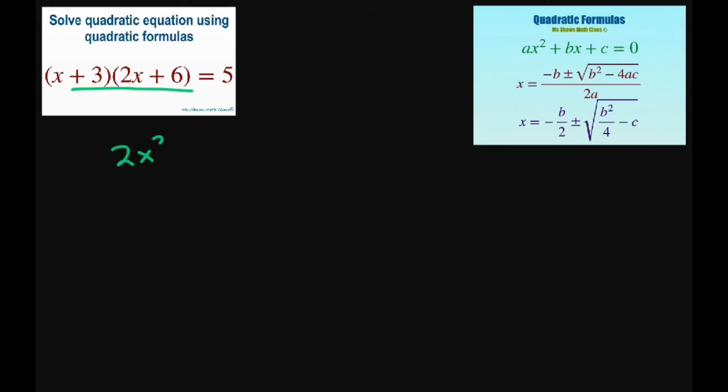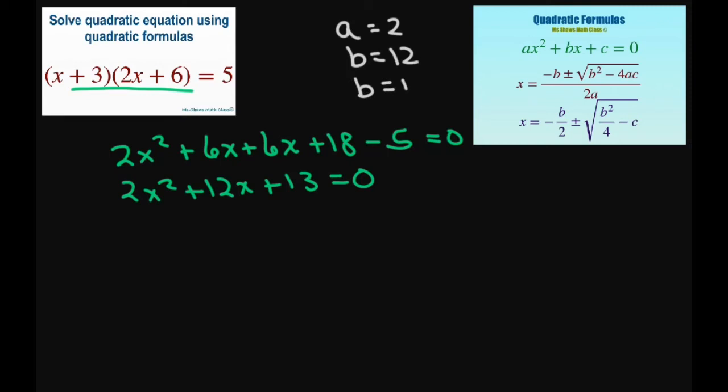2x squared plus 6x plus 6x plus 18 minus 5. So this is going to give you 2x squared plus 12x plus 13 equals 0. And then you let a equal 2, b equal 12, and c equal 13.